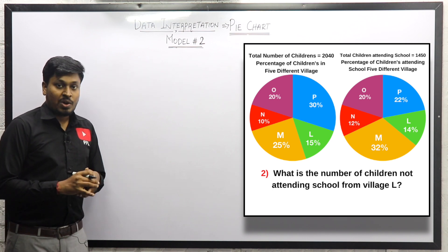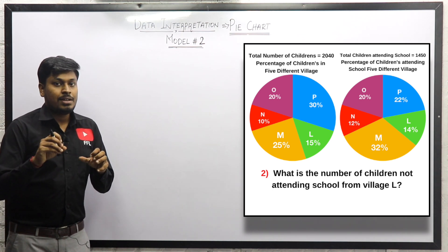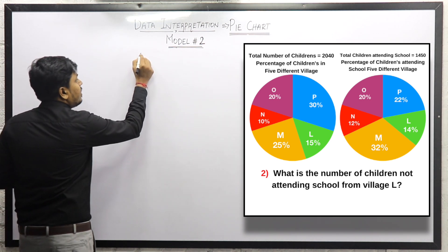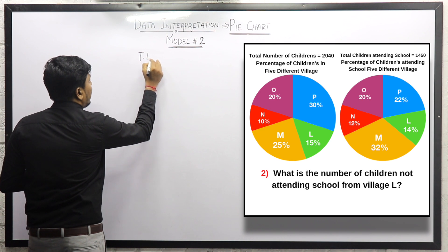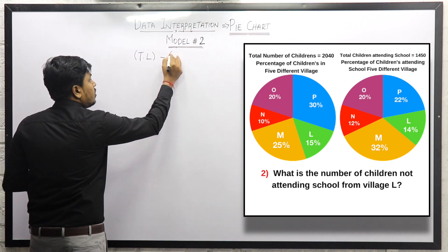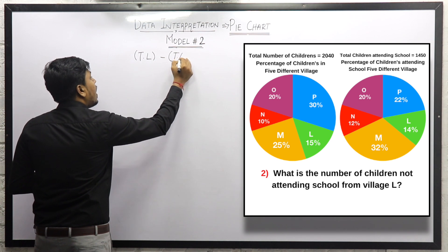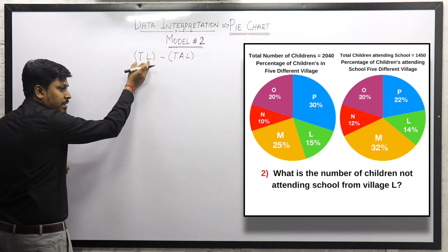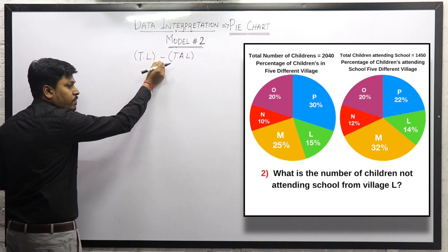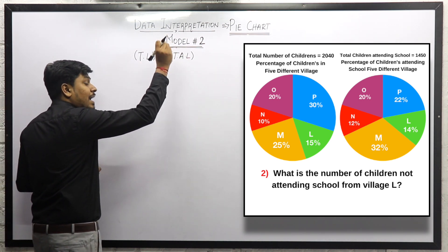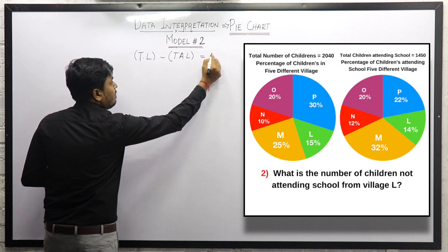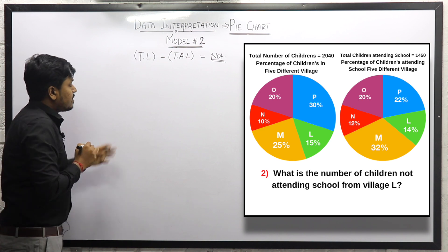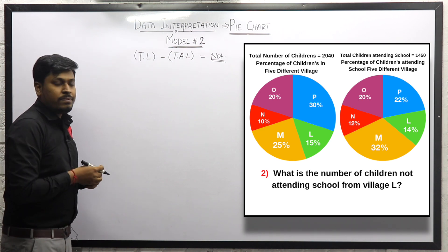Question number 2: What is the total number of children who are not attending school from village L? Our target is to find children not attending. We take total children from village L minus children attending school from village L. The resultant will be children not attending. Village L is 15% according to chart number 1, so 15% of 2040.